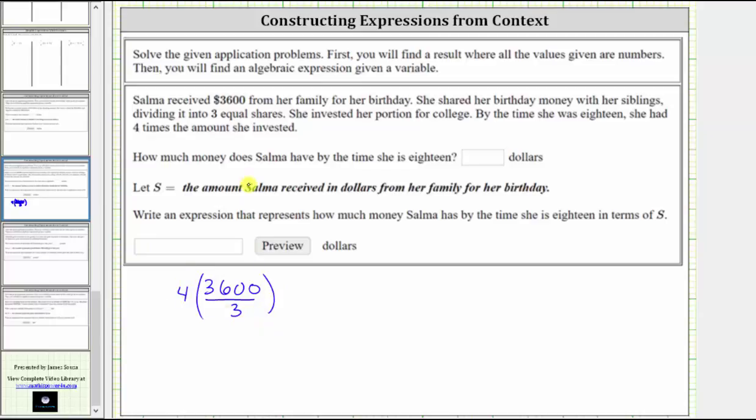The value of this expression will give us how much money Salma has by the time she is 18. Following the order of operations, we simplify inside the parentheses first by determining this quotient. $3,600 divided by three equals 1,200, which gives us four times 1,200, and four times 1,200 is 4,800. So now we know Salma has $4,800 by the time she is 18.